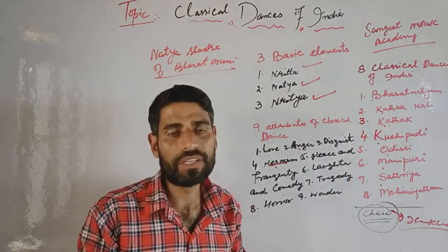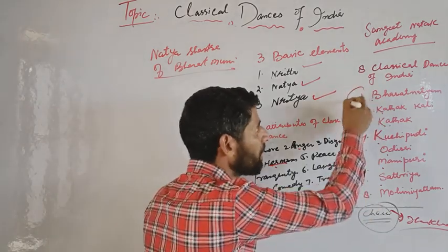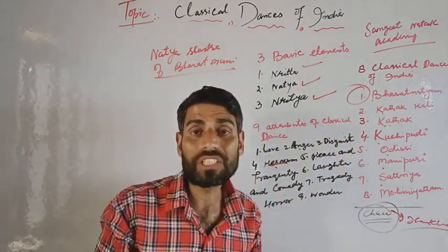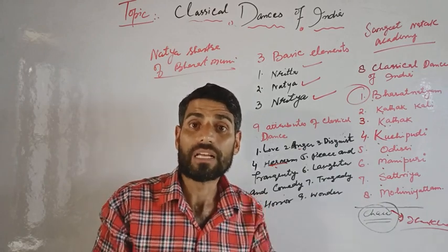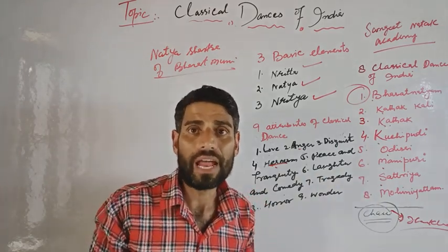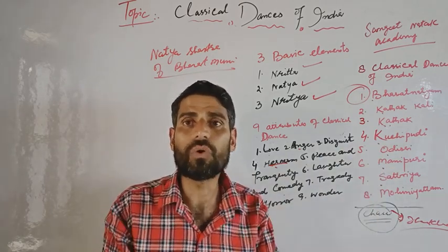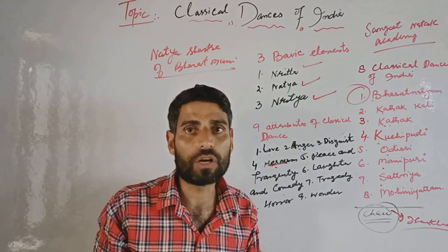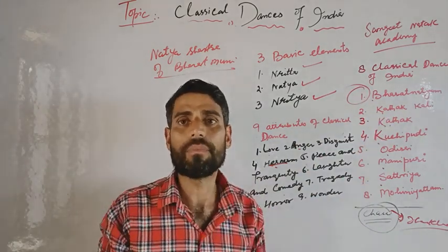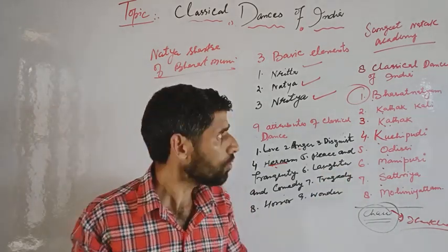The first classical dance is Bharatnatyam. It is the oldest and is considered the mother of all dance forms of India. Bharatnatyam originated in Tanjore in Tamil Nadu, and is a purist form of classical dance.